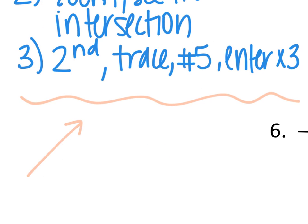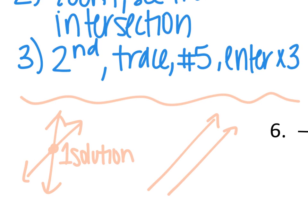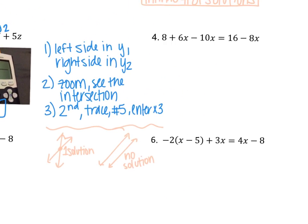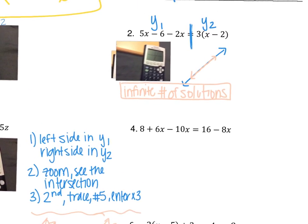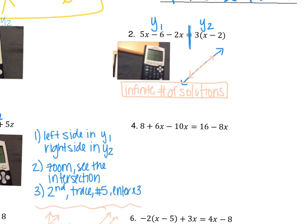Let me remind you of the types of solutions. If two lines intersect one time, they have one solution. If two lines are parallel, they have no solution — they will never intersect. And if two lines are the same line, as we saw in problem 2, they will have the same tables, which means there is an infinite number of solutions.